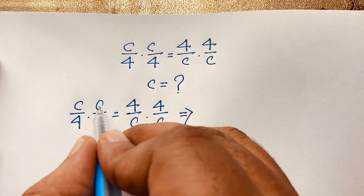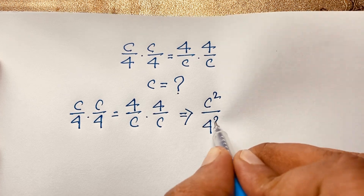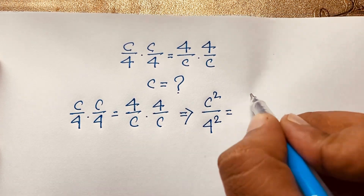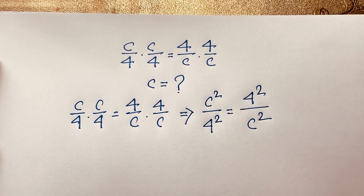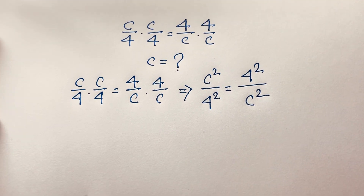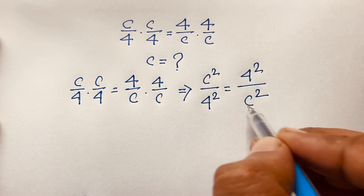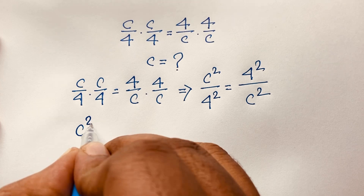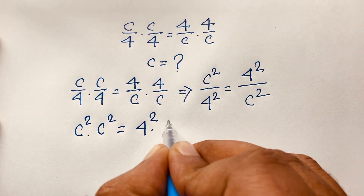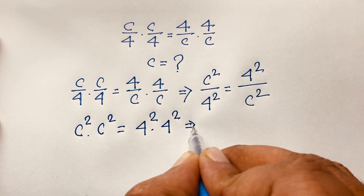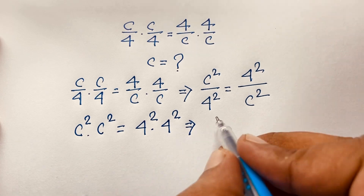You can see easily this c times this c it will be c squared, and this four times this four it will be four to the power two. That equals this four times this four, which is four squared, and this c times this c is c squared. I'll solve this step by step. Multiplying across we get c squared times c squared is equal to four squared times four squared.